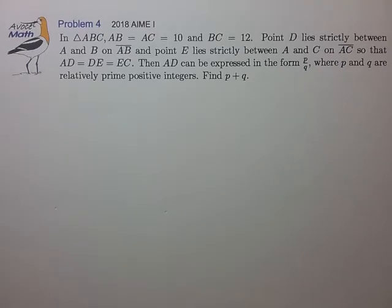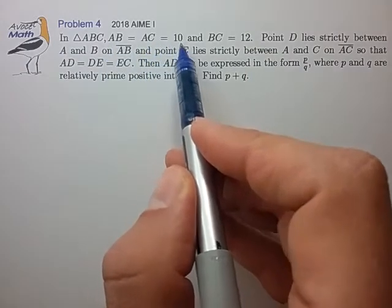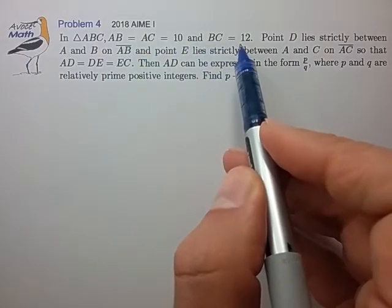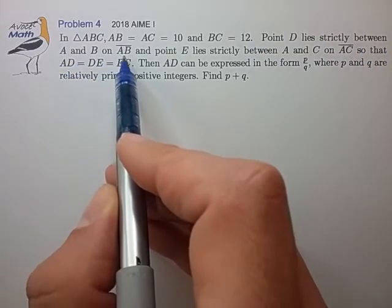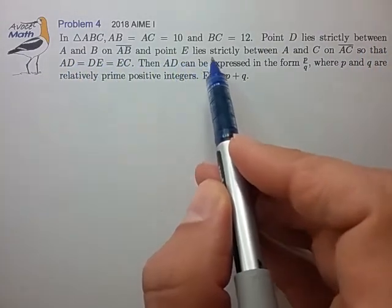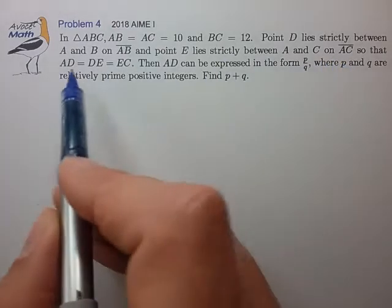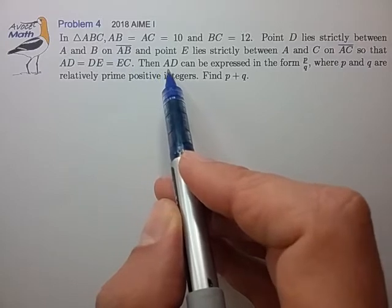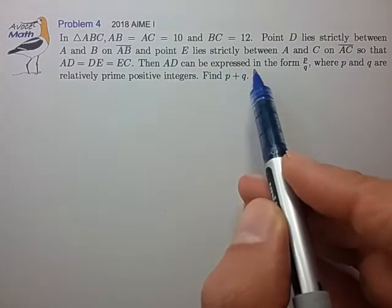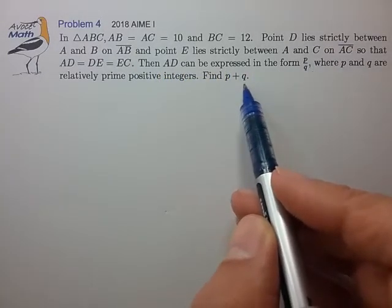This is problem 4 from the 2018 AIME 1. In triangle ABC with AB equal to AC equal to 10, and BC of length 12, point D lies strictly between A and B on side AB, point E lies strictly between A and C on side AC, so that AD equals DE equals EC. AD can be expressed as a reduced fraction P over Q. Find the sum P plus Q.